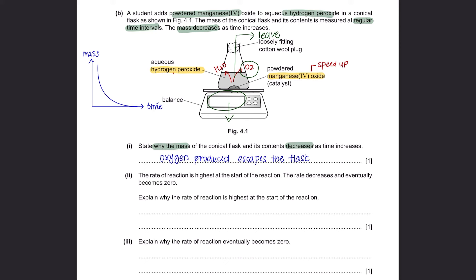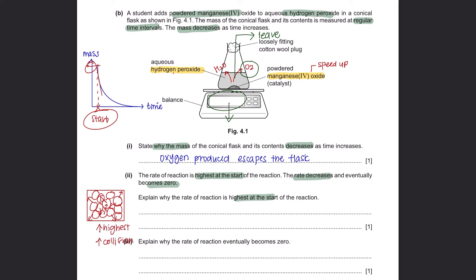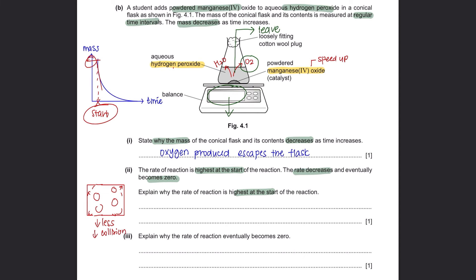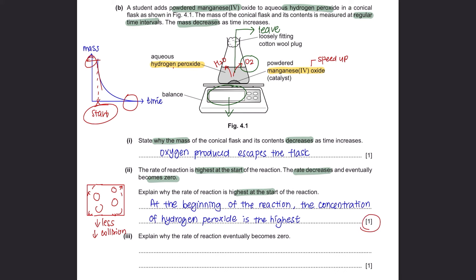Part 2: the rate of reaction is highest at the start because the concentration of hydrogen peroxide is at its highest, meaning collision frequency is also at its greatest, resulting in the highest rate of reaction. As it decomposes, the concentration decreases and collisions slow down, so the rate decreases. Since the question provides only one mark, you can state either that the concentration of hydrogen peroxide is highest, or that the frequency of collision is at its highest.